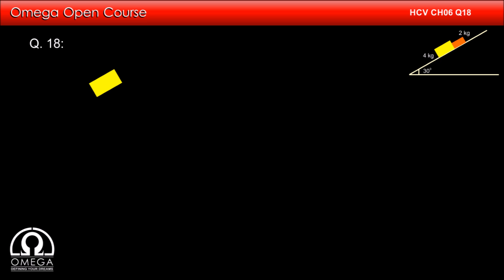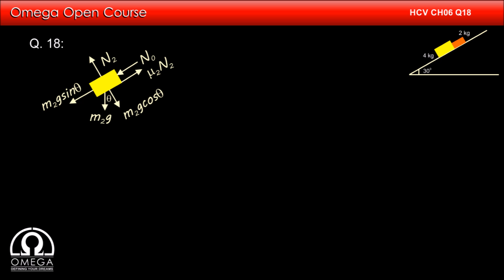Let us draw the free body diagram of the 4 kg block. A gravitational force M2g acts vertically downward. The component of gravity along the incline is M2g sin theta and perpendicular to the incline is M2g cos theta. The incline exerts a normal contact force N2 perpendicular to the incline. The smaller block pushes the 4 kg block down the incline with a force N0, and friction mu2 times normal acts up the incline. Since there is no motion perpendicular to the incline, N2 = M2g cos theta.